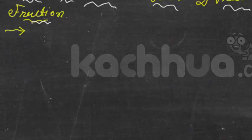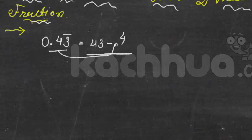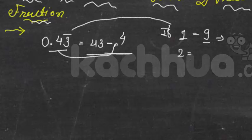So first one is 0.43 bar. Here after decimal point value put here, so 43 minus without bar number put here, so 4 upon. If one number has a bar, so put 9 in denominator. Two numbers has a bar, then use 99 in denominator.